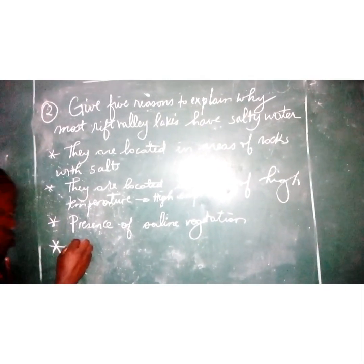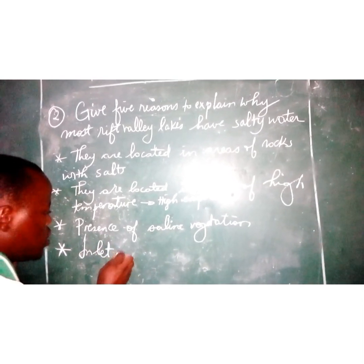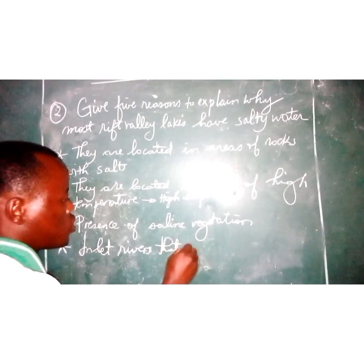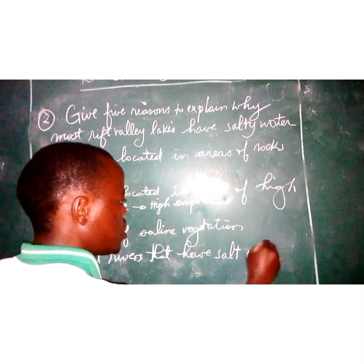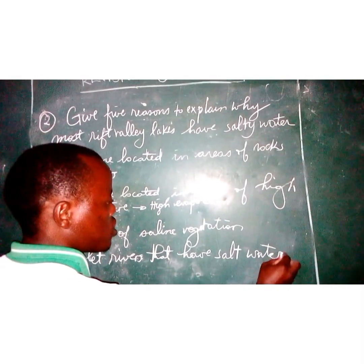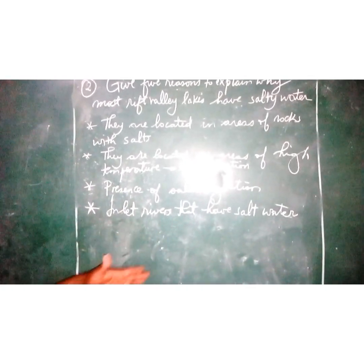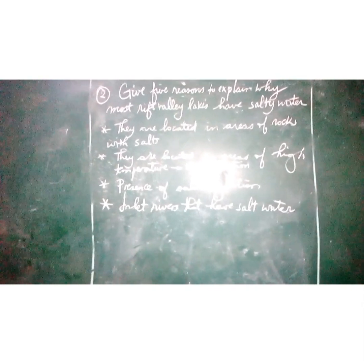Number four: presence of inlet rivers that have salt water. Most of those lakes are located in areas where they receive rivers that contain salts in their water, and thus this causes those lakes to have salt water or to be salty.